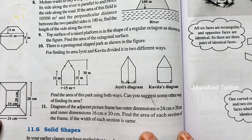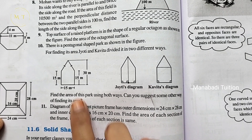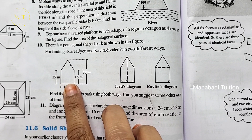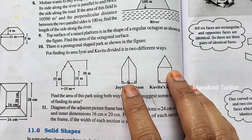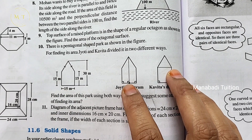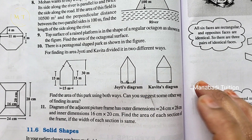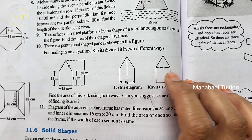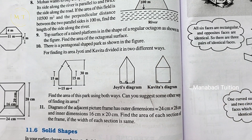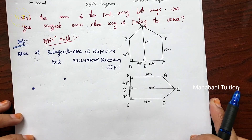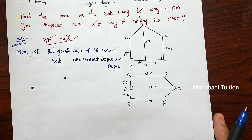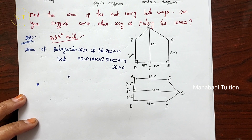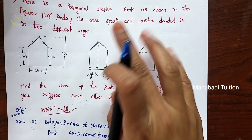Actually, it is a pentagonal shape. You can find two trapeziums using Jyoti's model. And Kavitha divides it into one square and one triangle. So first, Jyoti's model — you can find two trapeziums.